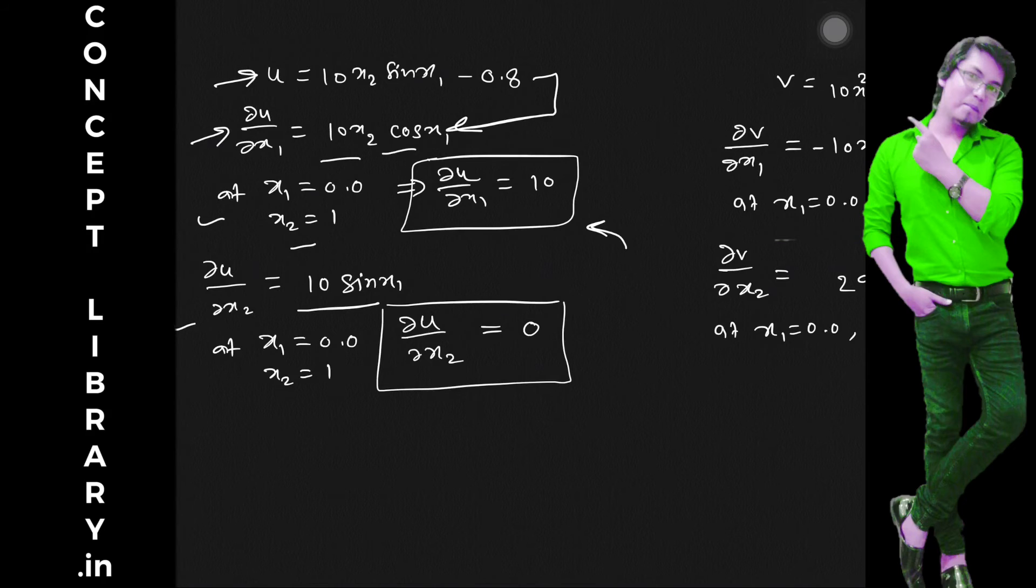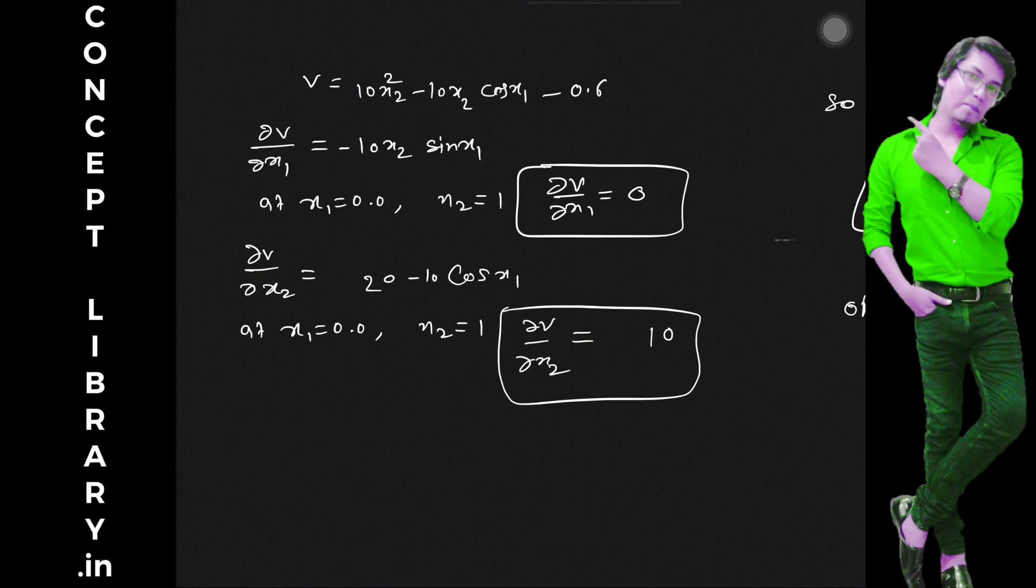In the same way, ∂u/∂x2 is equal to 10 sin x1, and at x2 equal to these values and x1 equal to this value, ∂u/∂x2 will give you 0.